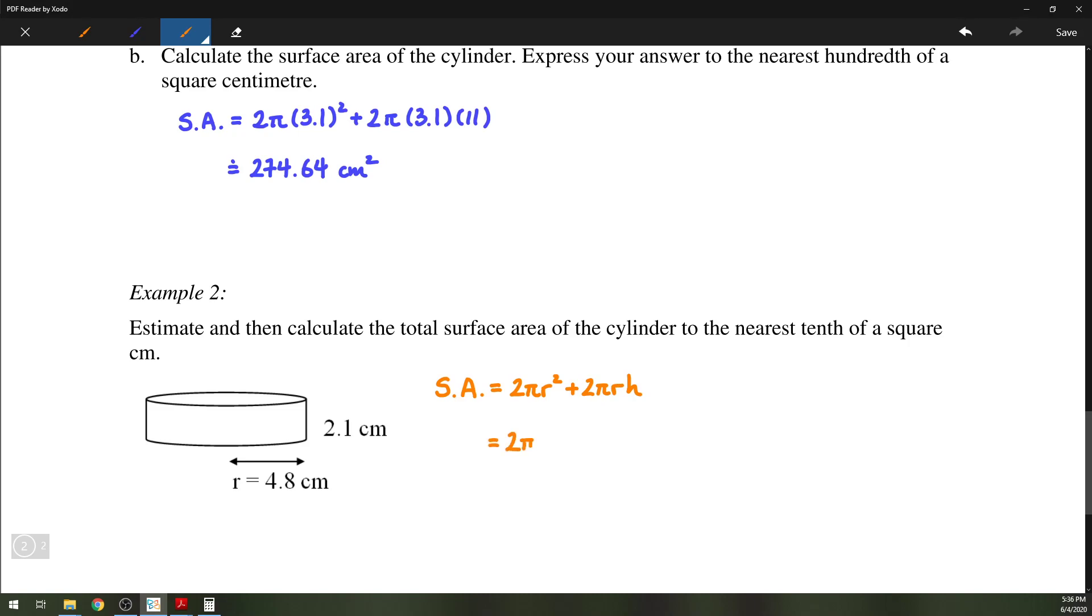Substitute in the radius. In this case, we're given the radius directly, so that's just 4.8 squared plus 2 pi and then 4.8. Once again, the radius multiplied by the height, which is 2.1.